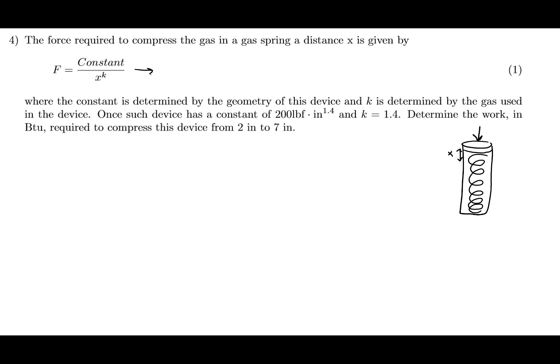The force is equal to some constant over x to the k, where x is the distance. The constant is determined by the geometry of the device, and k is determined by the gas used in the device. One such device has a constant of 200 pound-force·inch^1.4, and k is equal to 1.4 — numbers from empirical or experimental data. We need to determine the work in BTU required to compress the spring from 2 inches to 7 inches.